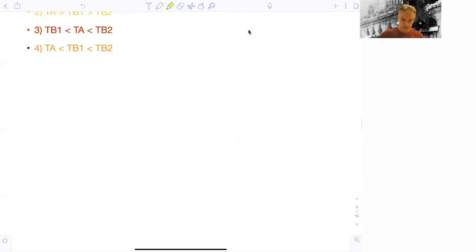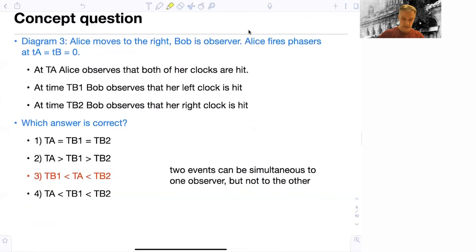So moving forward, the correct answer is number 3, where T B 1 is smaller than T A is smaller than T B 2. So again, the leading clock lags. The leading clock has a larger T B, which means that clock ticks a little slower. And again, the two events, they can be simultaneous to one observer, Alice in this case, but not to another, Bob.